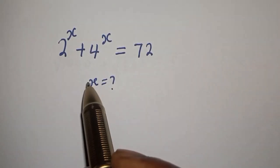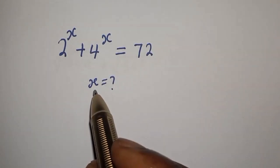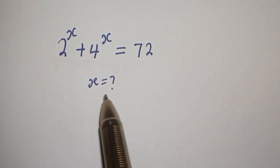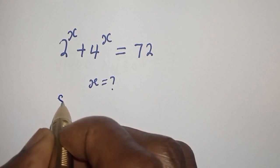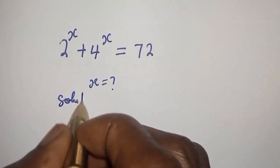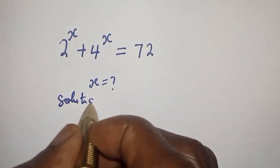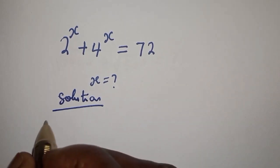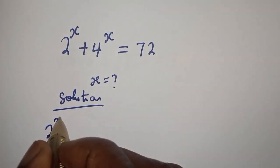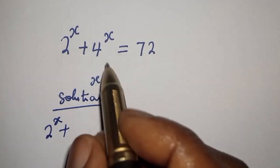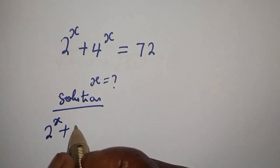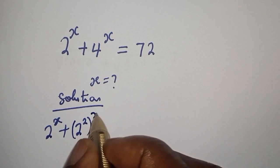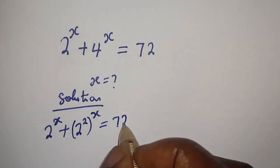Hello, in this class I want to find the value of S from this equation: 2 raised to power S plus 4 raised to power S is equal to 72. Solution: 2 raised to power S plus 4 raised to power S can be written as 2 squared raised to power S, which is equal to 72.